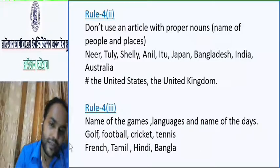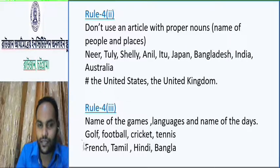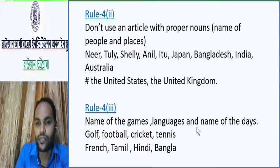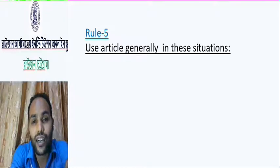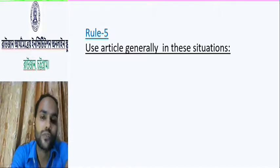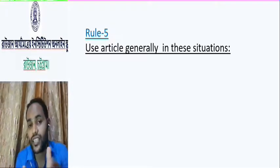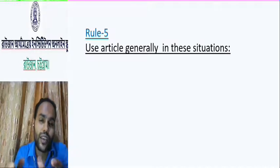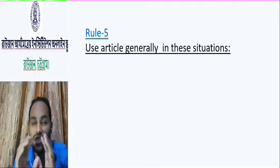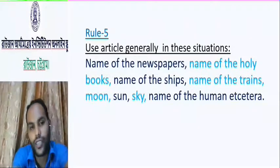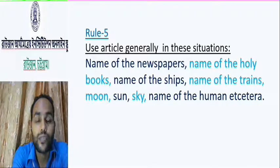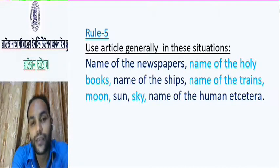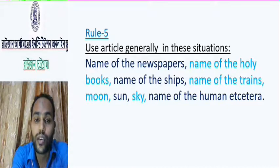Here are some examples of games: golf, football, cricket, tennis. Some languages: French, Tamil, Bangla. Rule number five: Use articles generally in this situation. Actually, here you cannot follow any grammatical system — we have to put articles generally. Look here — name of the newspapers: there are many newspapers in our country — The Prothomalo, The Daily Independence — we put 'the' before newspaper names. Name of the books — some favorite and holy books we read.